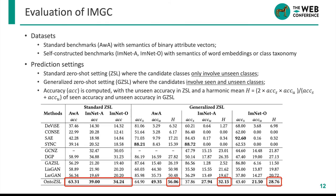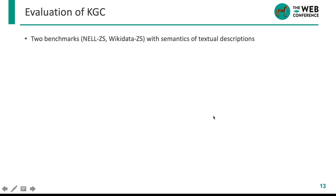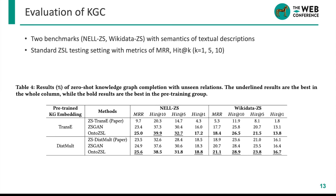Compared with the attribute semantics used in AWA and the word embeddings and class taxonomy semantics used in ImageNet subsets, our ontology-based class semantics achieves state-of-the-art performance in both standard ZSL and generalized ZSL. In the zero-shot knowledge graph completion task, we conduct experiments on two datasets extracted from NELL and Wikidata. We study the standard ZSL testing setting, considering that the candidate space involves unseen relations.